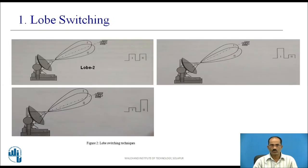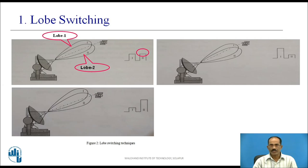The first one is lobe switching. In lobe switching tracking technology, the antenna beam is rapidly switched between two positions around the antenna axis in a single plane, as shown. The two amplitudes — satellite echo amplitude 1 and satellite echo amplitude 2 — are compared for the two lobe positions, position 1 and position 2. The difference between the two amplitudes is the indication for locating the target, which is the satellite, with respect to the antenna axis.